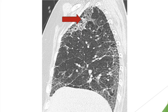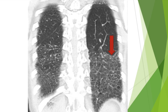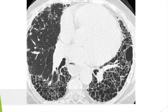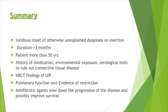In the anterior upper lobe sign, there is honeycombing, traction bronchiectasis, and fibrosis in the anterior aspect of the upper lobes with relative sparing of the posterior aspect. The straight edge sign means fibrosis is limited to the lung bases with a sharp cut-off in the craniocaudal aspect without much extension along the lateral borders. The most helpful sign is the exuberant honeycomb sign, where honeycombing constitutes almost 70 percent of the fibrosis in that lung.